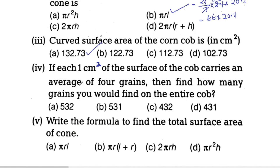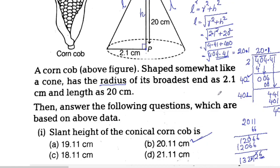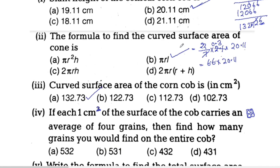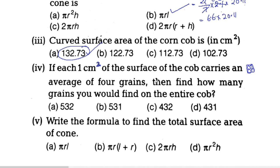Next question: how many grains are on the corncob? Each grain occupies 1 square centimeter of surface. On each square surface there are 4 grains. We use the curved surface area of 132.73 cm² to find the total number of grains.